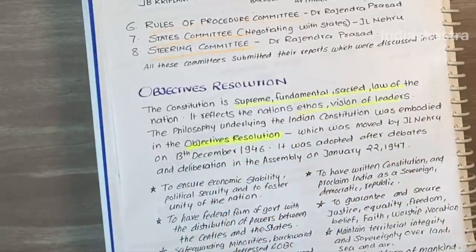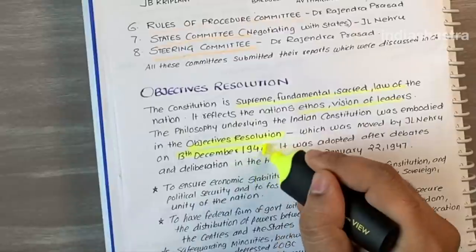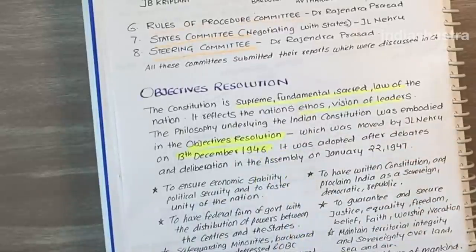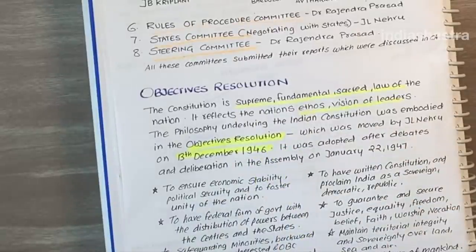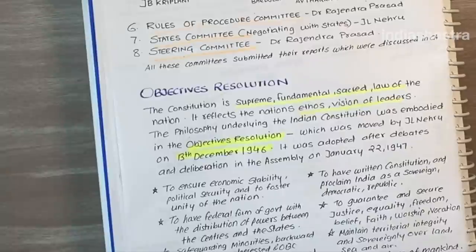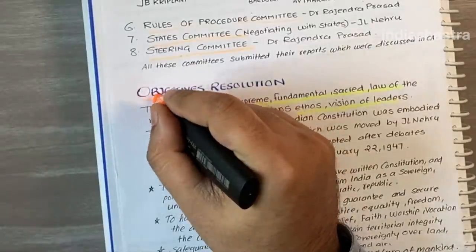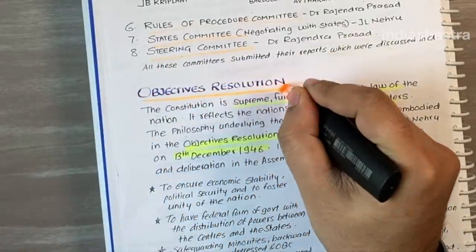The objectives resolution was moved by Jawaharlal Nehru on 13 December 1946 and was adopted on 22 January 1947. This objectives resolution acted as a guideline for the members of the constituent assembly.